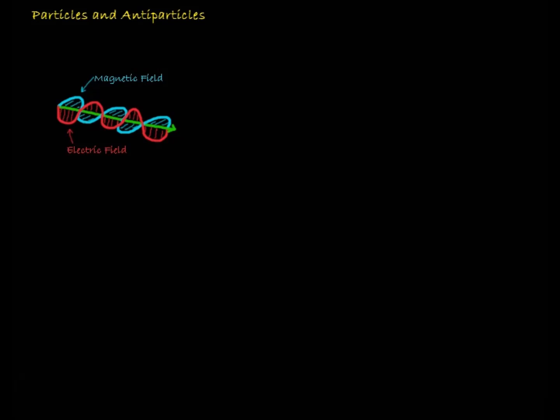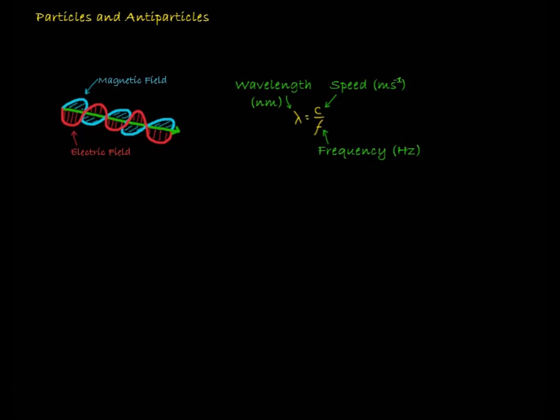All electromagnetic waves in a vacuum travel at the speed of light, 3 times 10 to the 8 metres per second. We can calculate the wavelength of an electromagnetic wave in a vacuum by dividing the speed of light by its frequency. If we're not in a vacuum we divide its speed by its frequency.